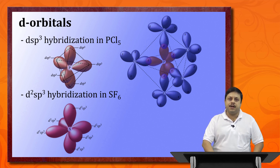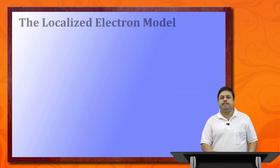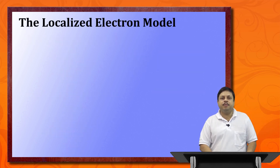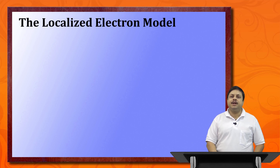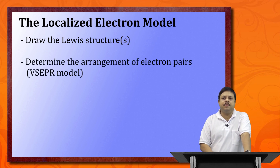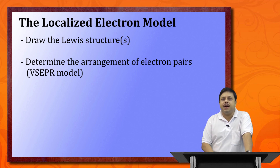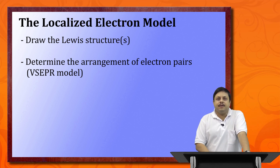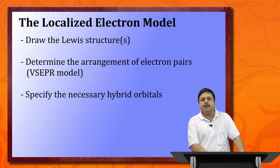Let us now look at a brief description of how to assign correct shapes to molecules. The first step is to draw the Lewis structures. Once drawn, you are aware of the total number of lone pairs and bond pairs, and you know how lone pair–lone pair, bond pair–bond pair, and lone pair–bond pair repulsions will determine the molecular shape. The third step is to specify the kind of hybridization required for the central atom.